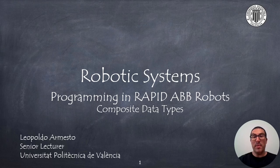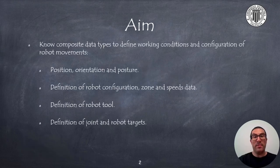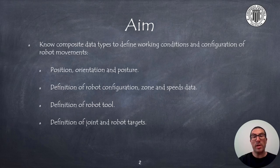This video is part of a mini-tutorial on how to program in RAPID. The aim of this presentation is to introduce the main composite data types used in RAPID that allow defining working conditions and configurations for robot movements. Specifically, I would like you to learn data types that allow you to define a position, an orientation, and a posture, as well as different robot configurations, zone and speed data, and so on. We will also see how to define the robot tool and how to define joint and robot targets.